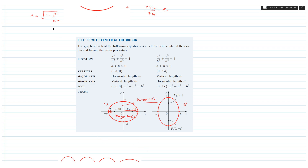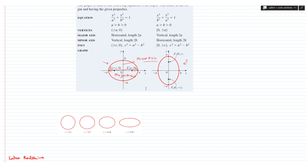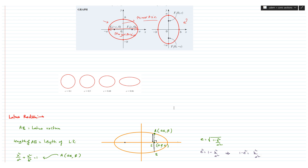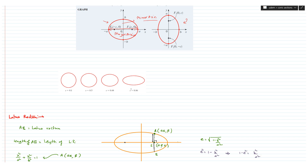We have seen how to get the eccentricity and foci of an ellipse. The eccentricity is a measurement of the flatness of the ellipse. If the eccentricity comes closer to 0, the ellipse will be more like a circle. When the eccentricity goes closer to 1 (but stays less than 1), the ellipse will be more flattened.